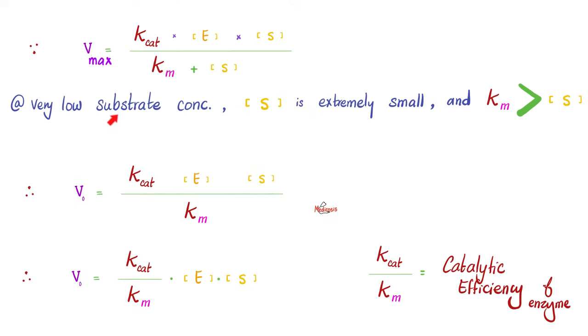If we have low substrate concentration, this S will be extremely small. And as you know, Km will exceed the S because the S is extremely small. Now, does it make any difference if you divide by 1,000 or if you divide by 1,000 plus 0.01? No, it doesn't make any difference because 1,000 plus 0.01 is almost 1,000.